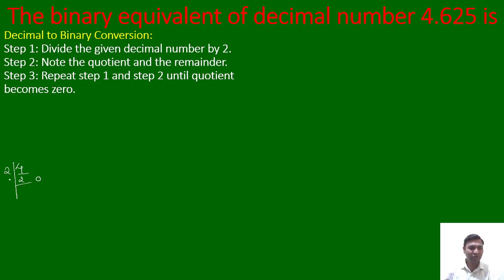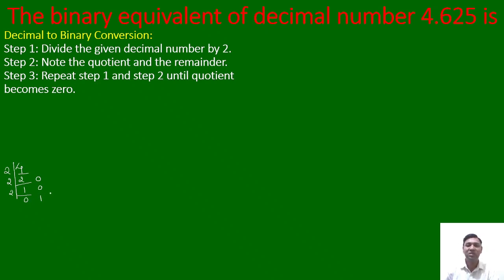Step 3 says repeat step 1 and step 2 until the quotient becomes 0. So I have to keep dividing until the quotient becomes 0. 2 divided by 2 gives quotient 1 and remainder 0. Now 1 cannot be divided by 2 because 1 is less than 2. As per basic mathematical rules, when the numerator is less than the denominator, the numerator acts as the remainder and the quotient becomes 0.